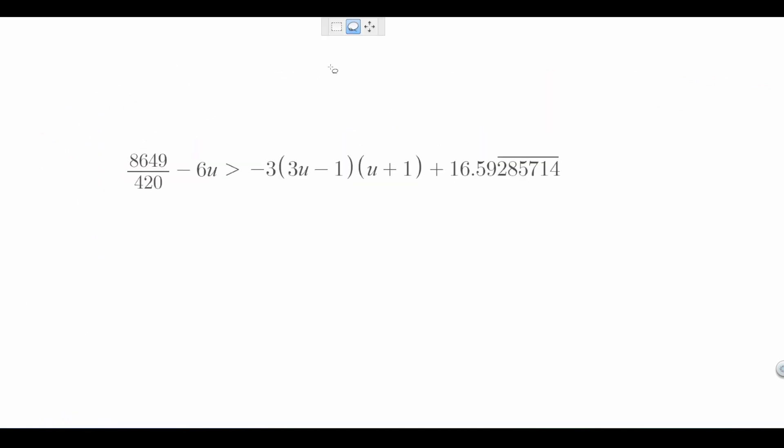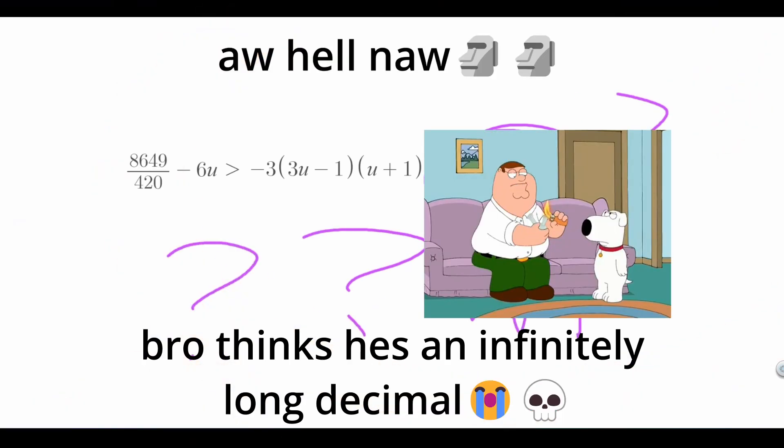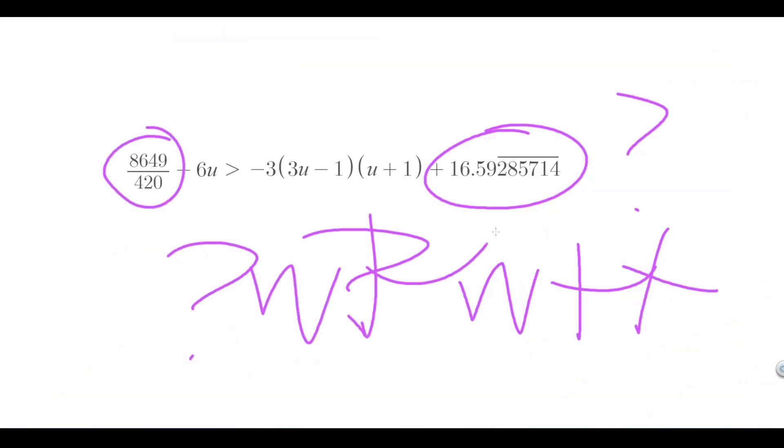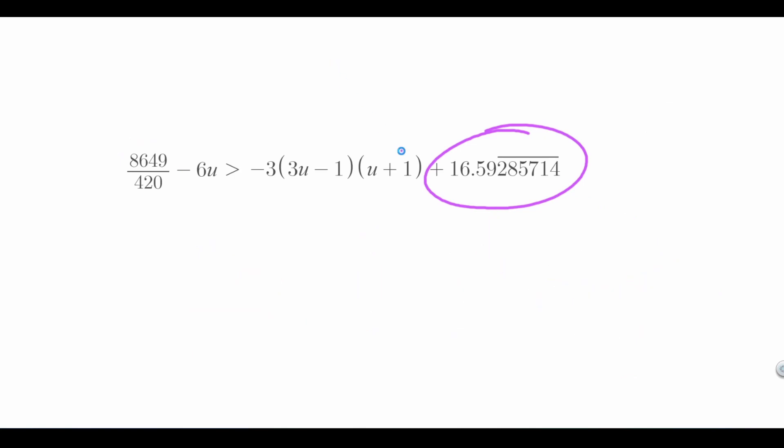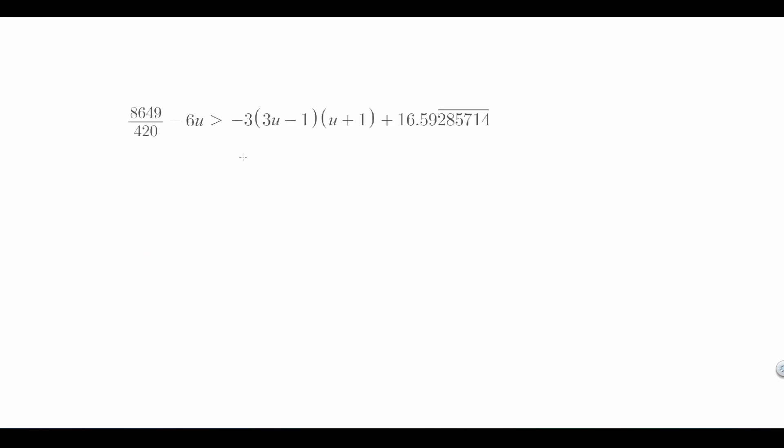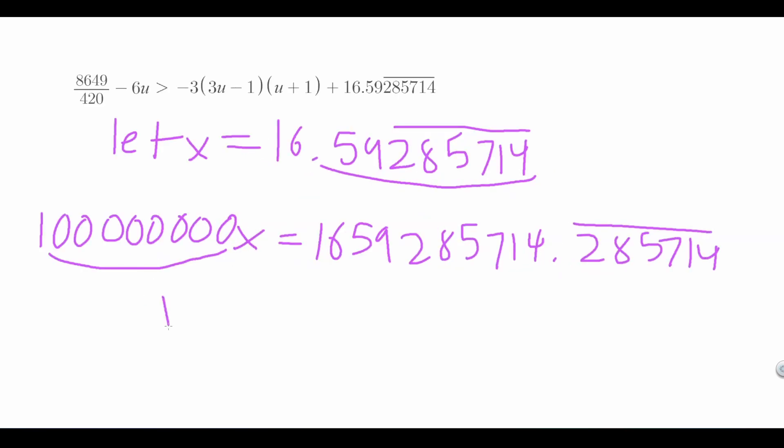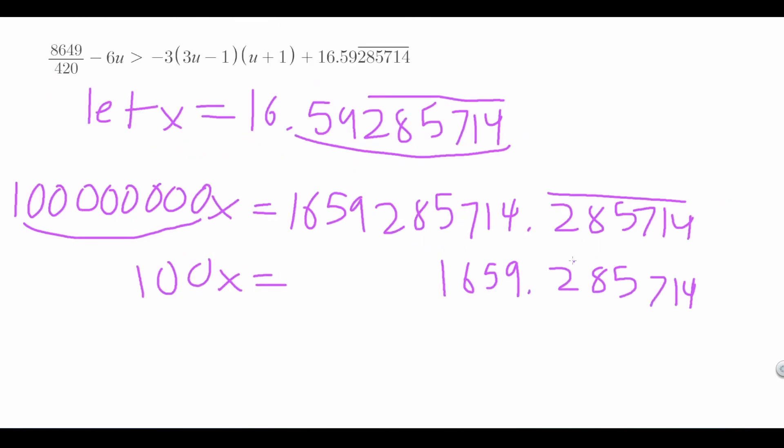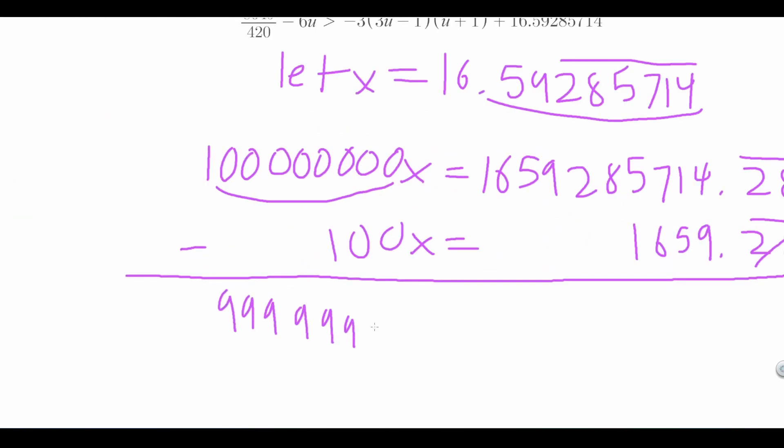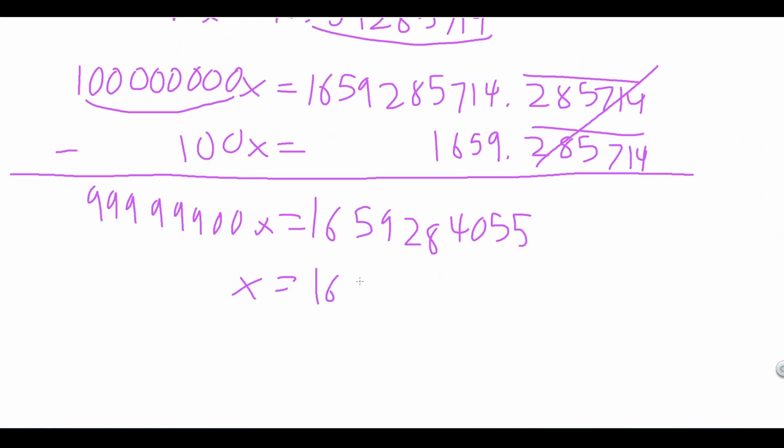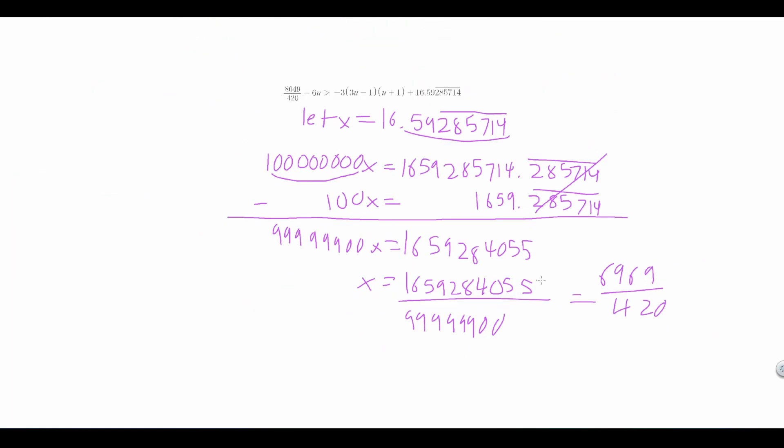Wait, but now what do we do with this repeating decimal? We can convert the fraction to decimal form. This is something we can do to get the fractional value of 16.59 and 285714 repeating. We can let X be equal to them. Which means that 100 million times X is equal to this. And 100 X is equal to this. We can now subtract the equations from each other. And we get this and now X is equal to this which simplifies to 6,969 over 420.